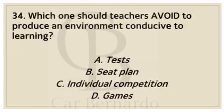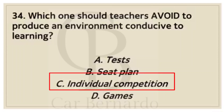Number thirty-four: Which one should teachers avoid to produce an environment conducive to learning? Letter A: Tests. Letter B: Seat plan. Letter C: Individual competition. Letter D: Games. Answer: Letter C, Individual competition.